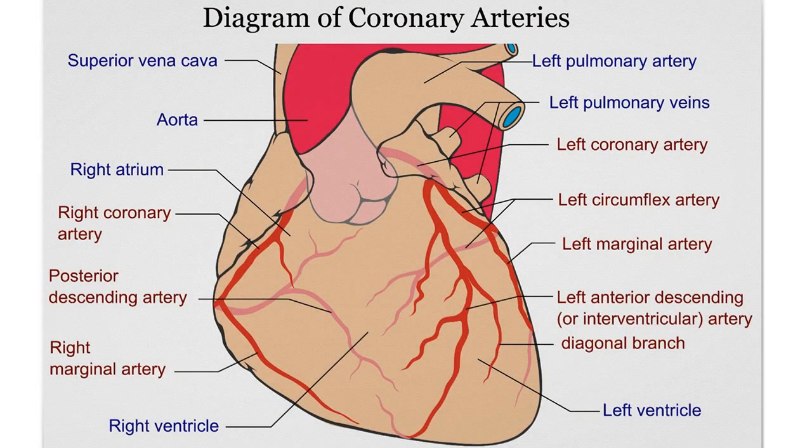Type 2 is called fatty streak lesions. Due to fusion of those fatty dots discussed earlier, they get linear and become large, with lesions up to 1 cm in size. These start appearing at an early age and are mainly found in the coronary artery.